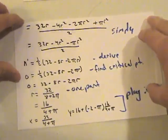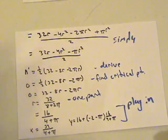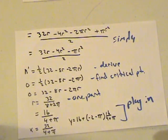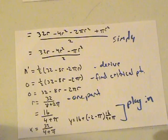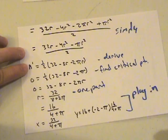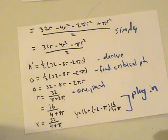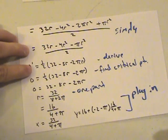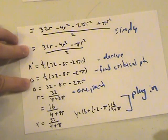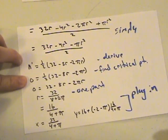And then we have 32r minus 4r squared minus 2pi r squared plus pi r squared. And we can just keep simplifying until we get to this simplified version. And then we can take the derivative in order to find the optimization for the critical points. And once we figure out the derivative, which is this, we move on to setting it to zero, finding the critical points.